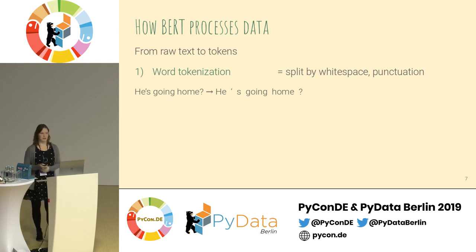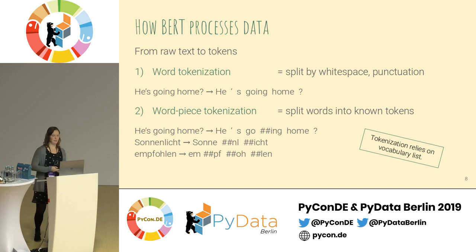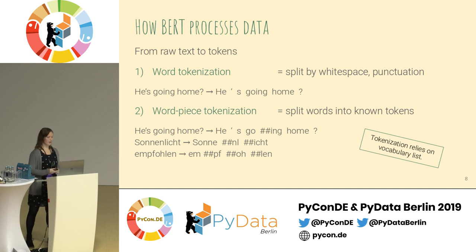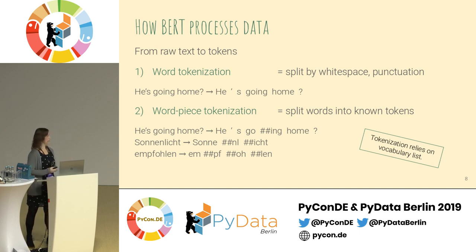There are two steps. In the first step, we take a sentence like 'he's going home', split by whitespace, and separate all punctuation symbols. Then there's a second step: WordPiece tokenization. For each word from the first step, we further split it if needed. In the 'he's going home' example, 'going' was split into two parts — the verb stem 'go' and the typical English suffix 'ing'. These kinds of examples are often used to visualize how WordPiece tokenization works.